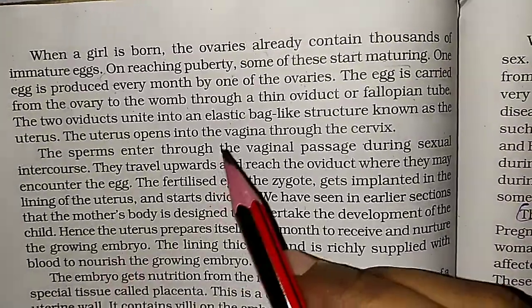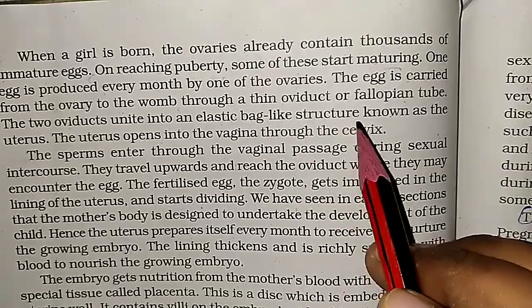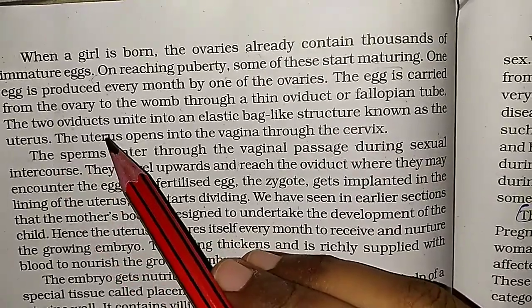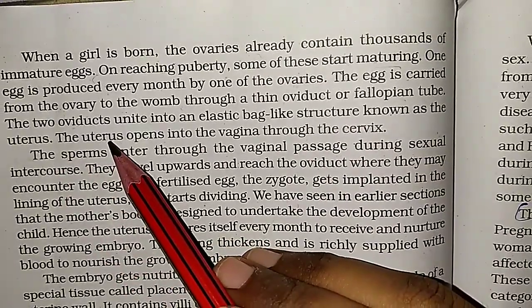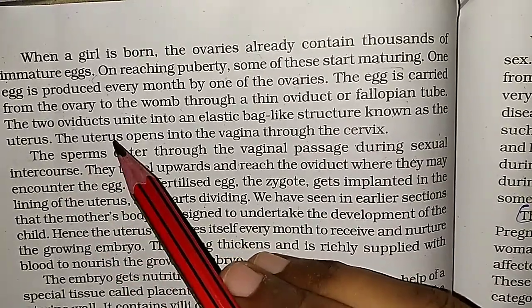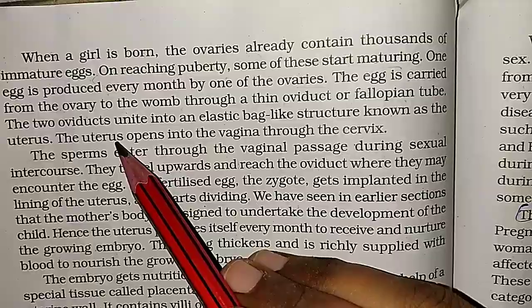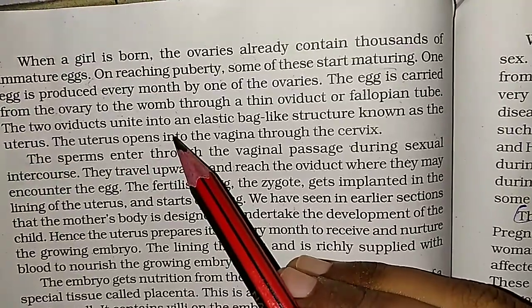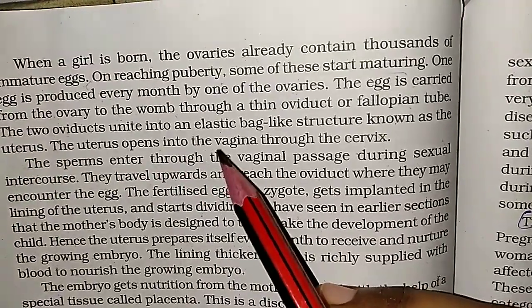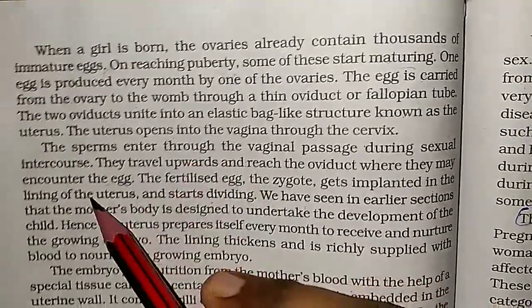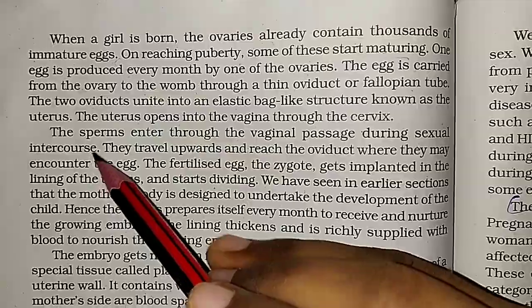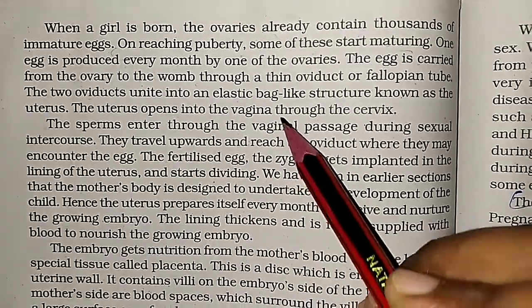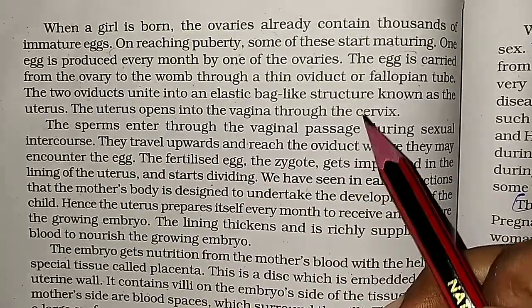The two fallopian tubes unite into an elastic bag-like structure known as the uterus.